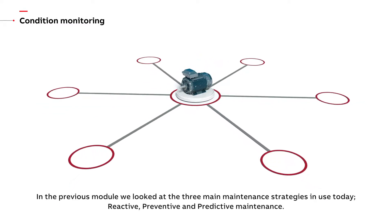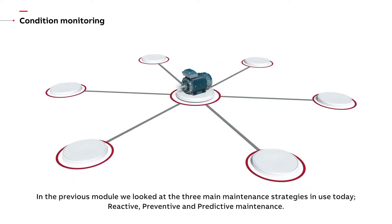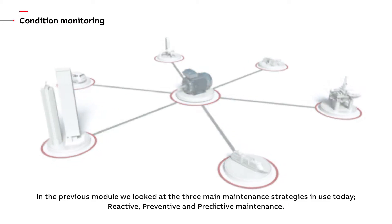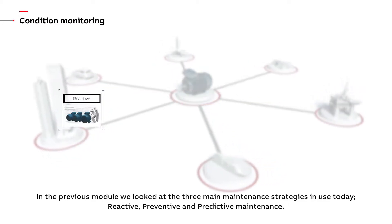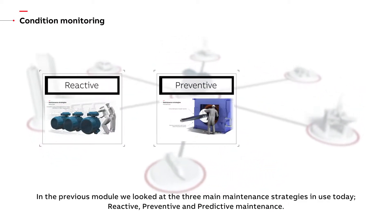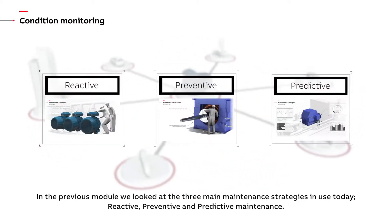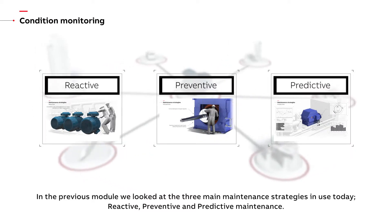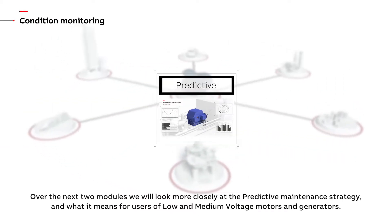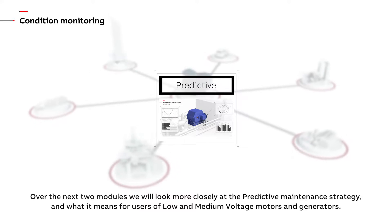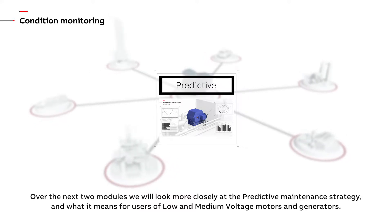In the previous module we looked at the three main maintenance strategies in use today: reactive, preventive, and predictive maintenance. Over the next two modules we will look more closely at the predictive maintenance strategy and what it means for users of low and medium voltage motors and generators.